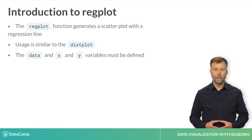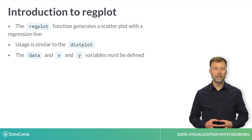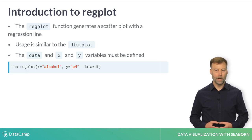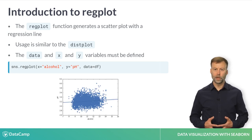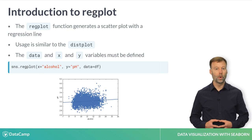The regplot function is the basis for building regression plots in Seaborn. The basic function call is similar to distplot, but we explicitly define the x and y variables as well as the source of the data. Since we are using a Pandas data frame, the x and y variables refer to the columns in the data frame. This basic process is similar for many other Seaborn plots, so it is good to make sure you understand this well before moving on to more complex plots.